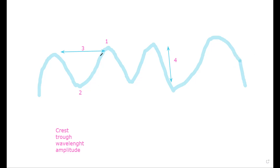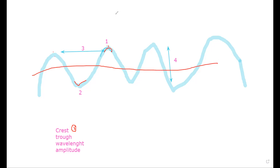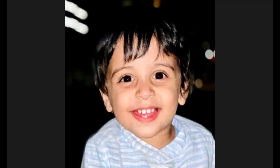Do you see this curve, girls? The top of the curve is called the crest — this is number one. And when you see the down curve, this is called the trough — this is number two. The distance between two crests is called wavelength. And this distance, half of it, is called amplitude. This is very important. That's why I came back and explained it on the white screen.